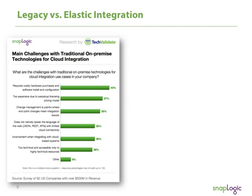Looking back at our survey data from working with TechValidate, we asked what are the main challenges of traditional on-premises technologies for integration. The answers were fairly self-evident: requires costly hardware purchases and software installation and configuration; too expensive due to perpetual licensing pricing models; and a lot of pain around change management, where endpoint changes mean integration rework.